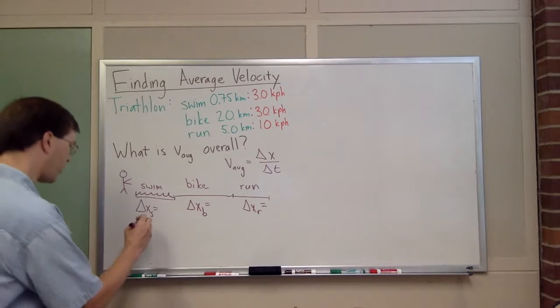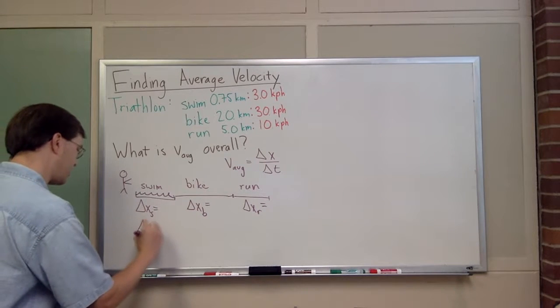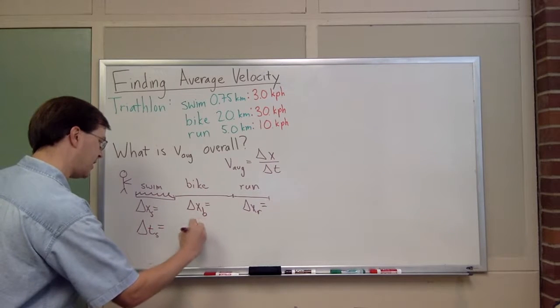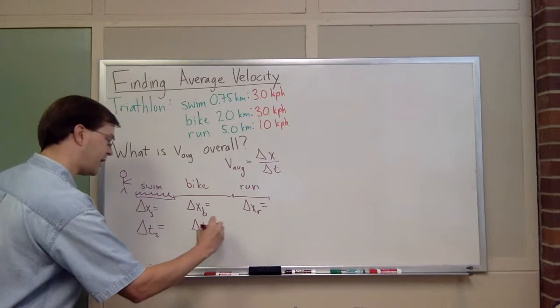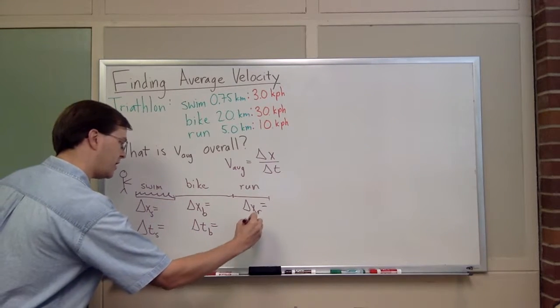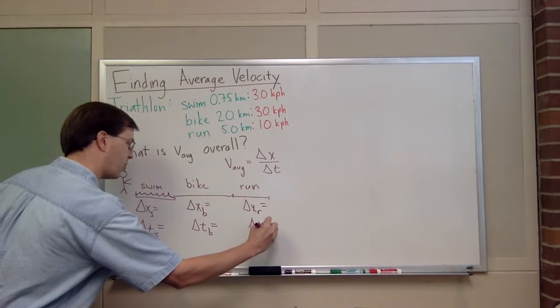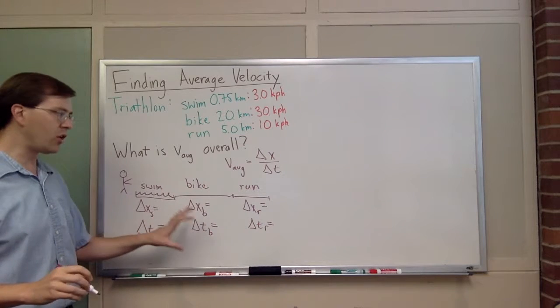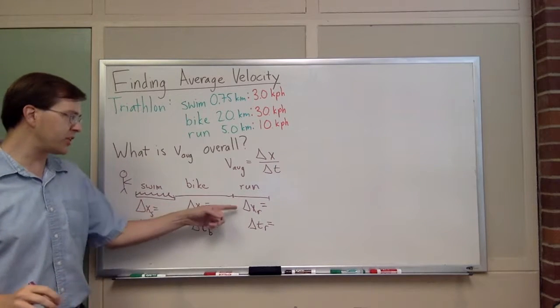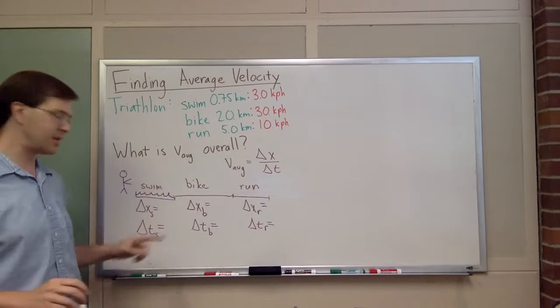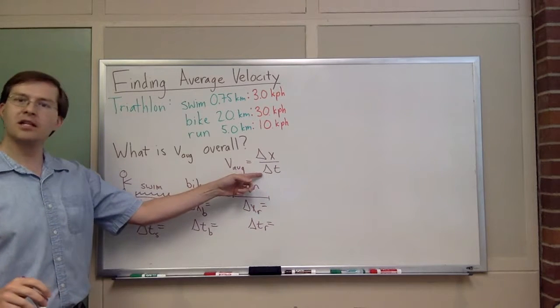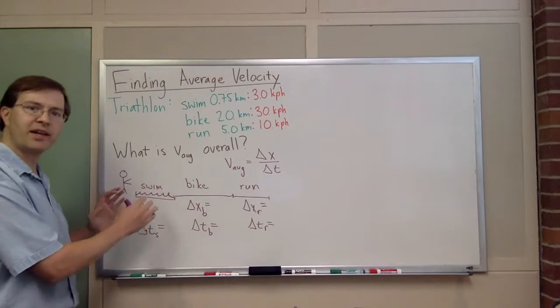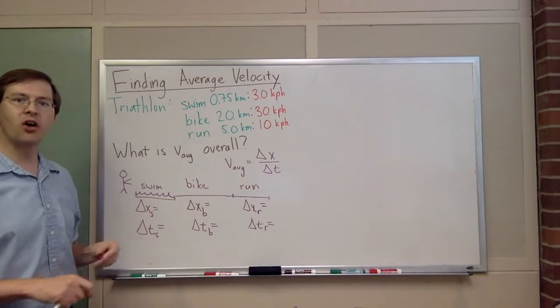There's going to be some delta t for swim, delta t for bike, and delta t for run. We're going to take the big problem, break it into these three pieces, and solve each one separately.